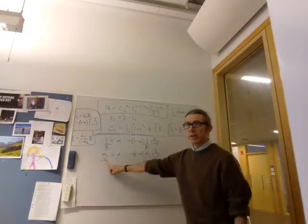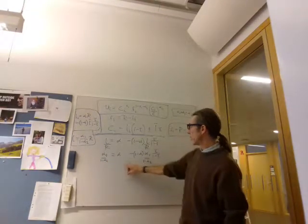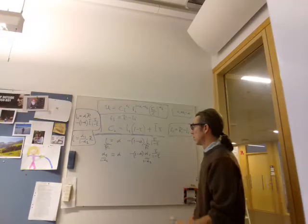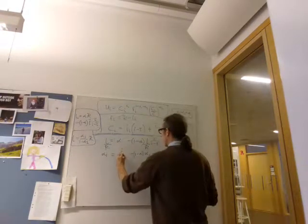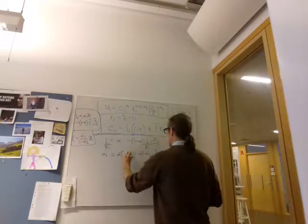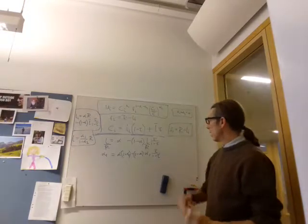And I've written this kind of weird because I'm now going to multiply through by 1 minus alpha 2 to get cancel, cancel, 1 minus alpha 2.